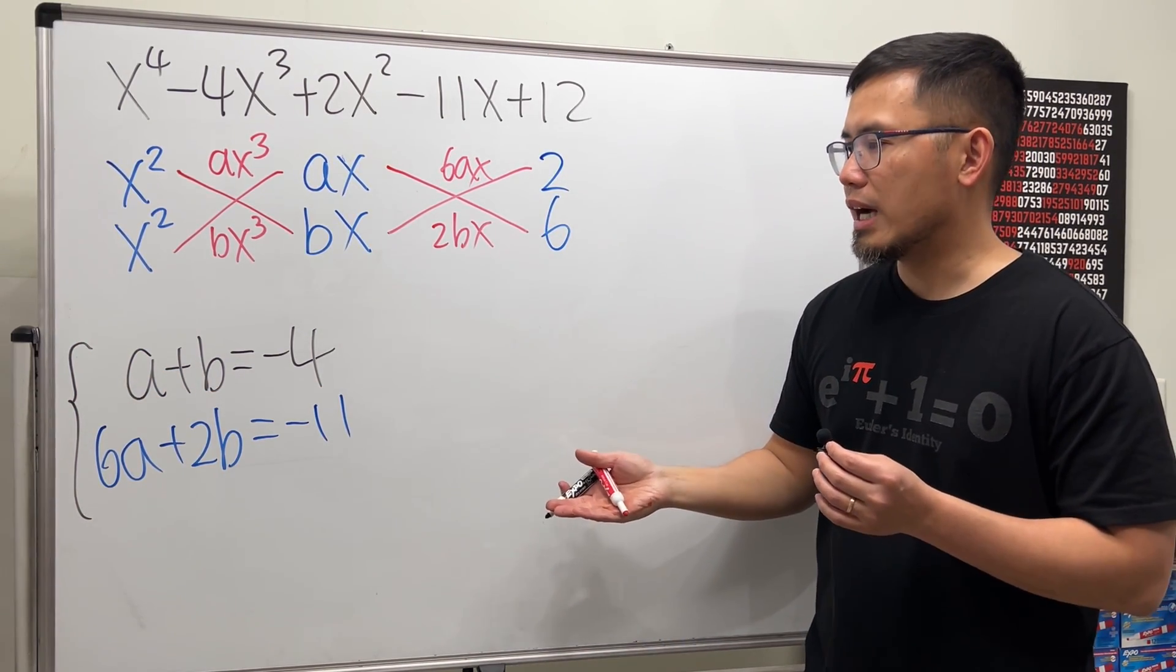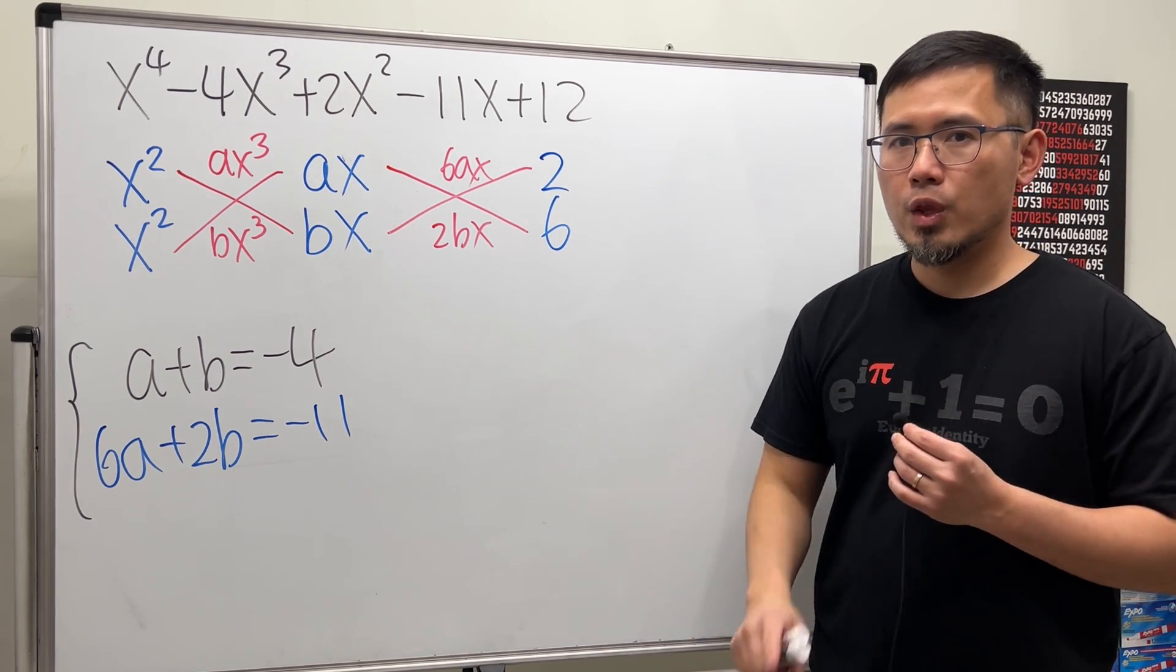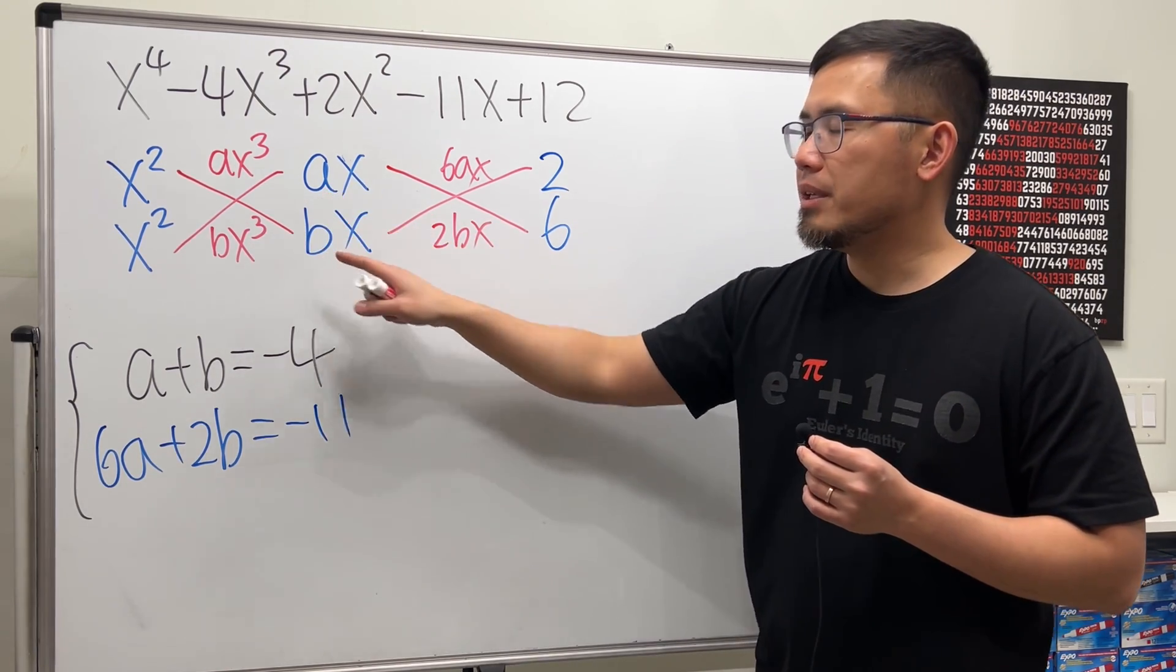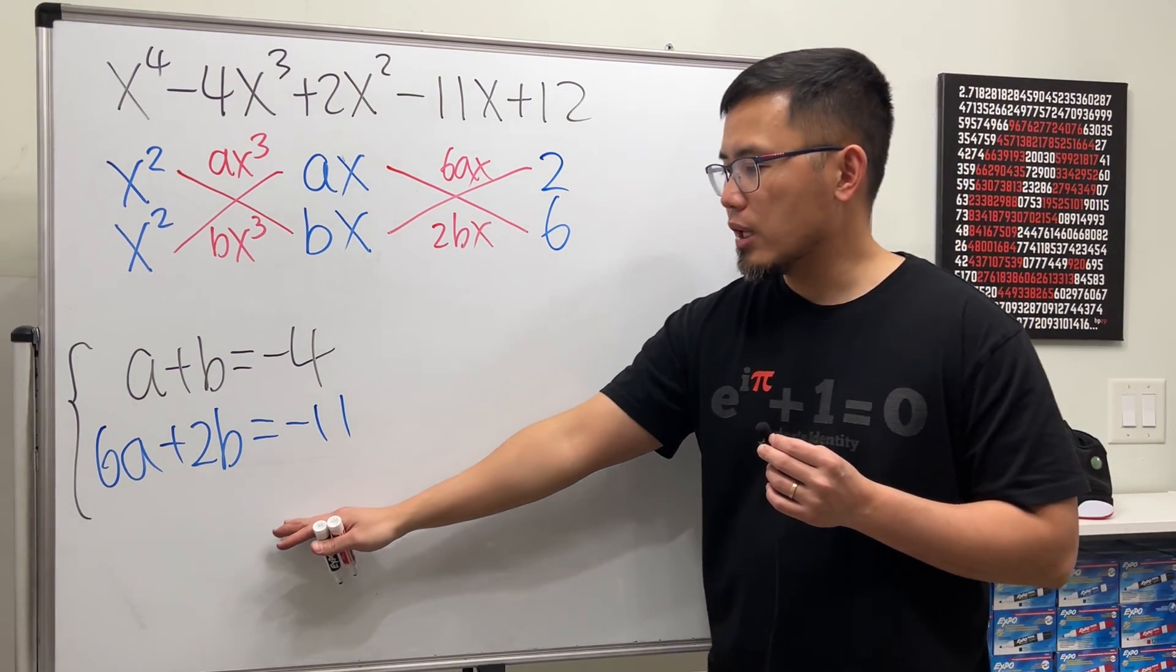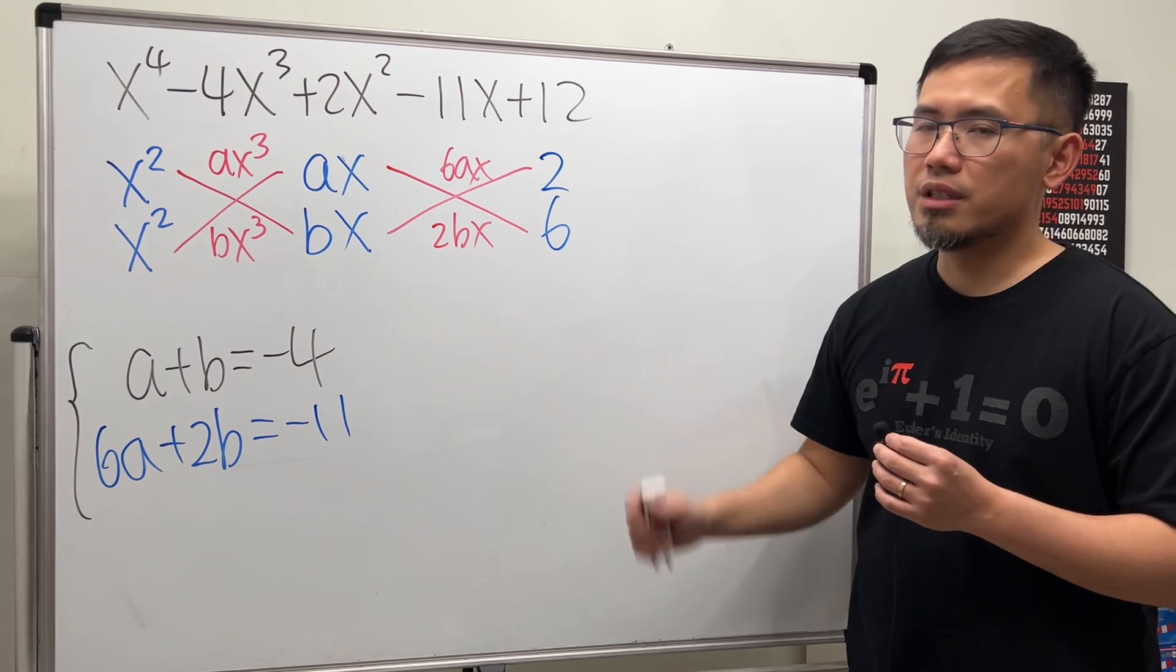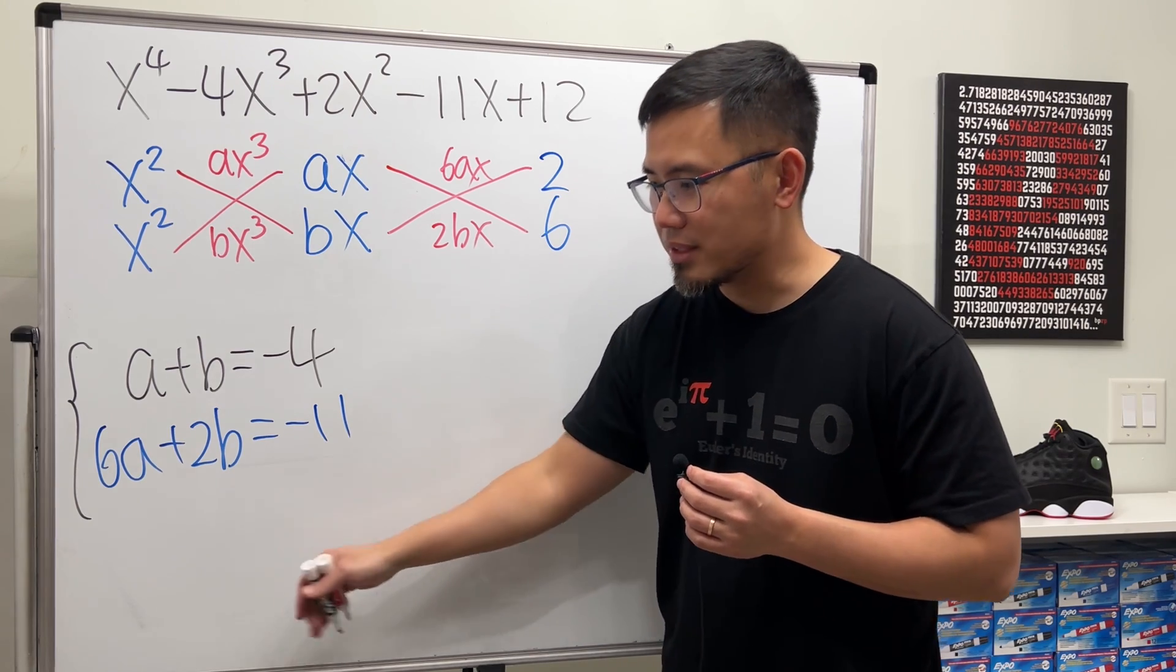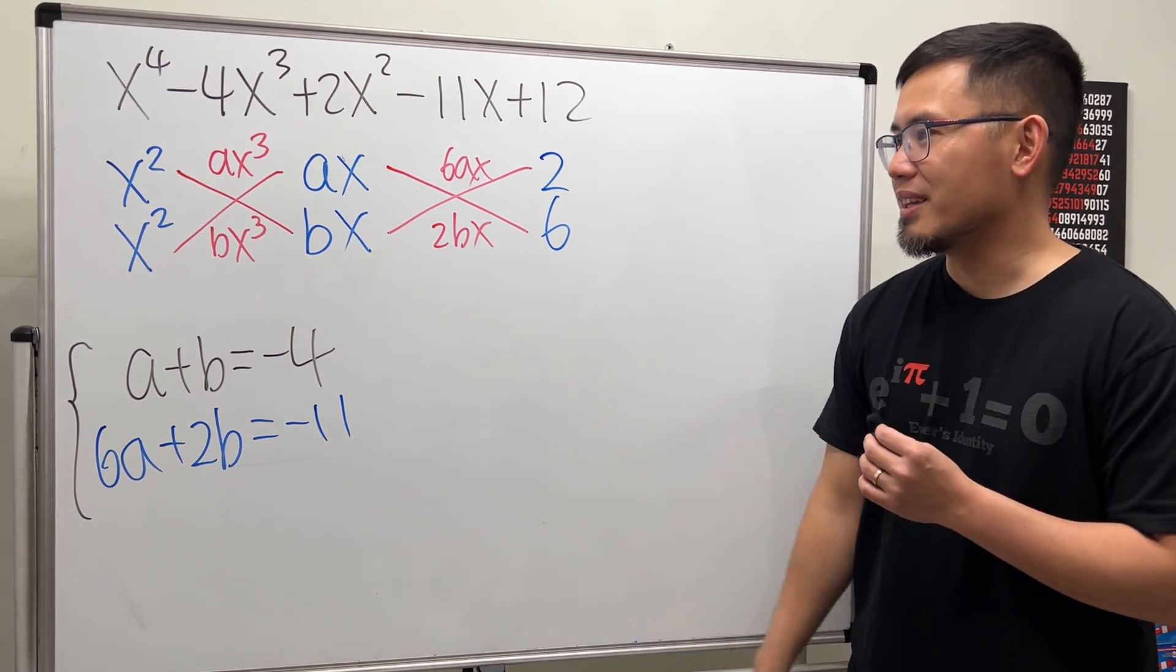But how would we know that if we have chosen the correct number right here and right here? Well, here's the deal. When we are doing fraction equations right here, we have to first make sure that a and b are whole numbers. If later on we don't get whole numbers for a and b, then for sure we know this is incorrect. But sometimes, even though you get whole numbers for a and b after you solve the system of equations, you still have to do one final check. I will show you that later.